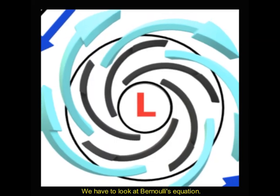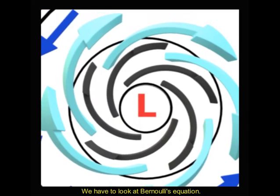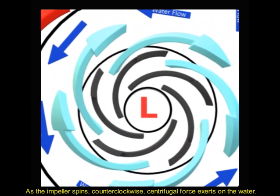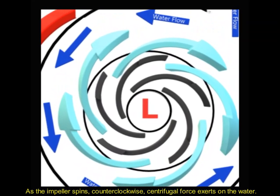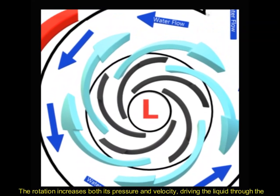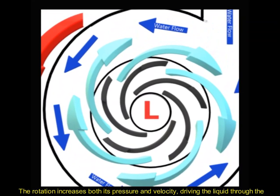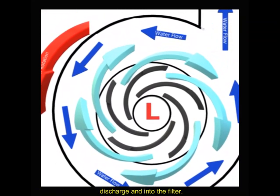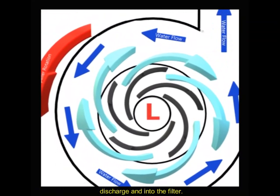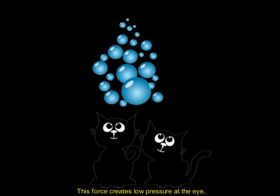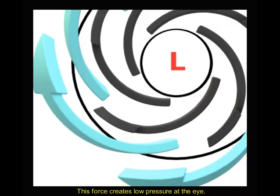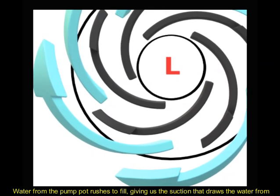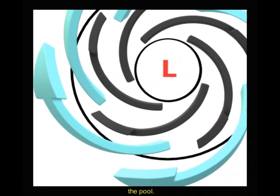We have to look at Bernoulli's equation. As the impeller spins counterclockwise, centrifugal force exerts on the water. The rotation increases both its pressure and velocity, driving the liquid through the discharge and into the filter. This force creates low pressure at the eye. Water from the pump pot rushes to fill, giving us the suction that draws the water from the pool.